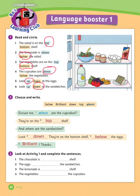Exercise number 3: Look at Activity 1 and complete the sentences. Let's see the answers. Number 1: The chocolate is on the top shelf. Number 2: The eggs are above the sandwiches. Number 3: The lemonade is on the bottom shelf. Number 4: The vegetables are below the cupcakes.